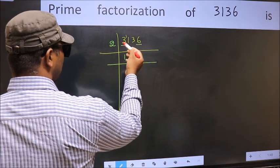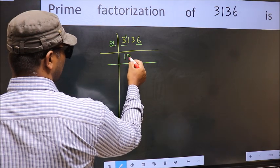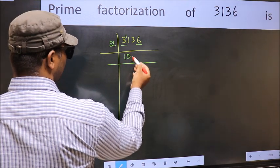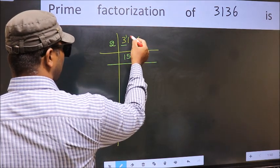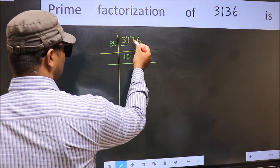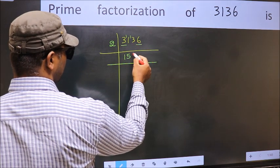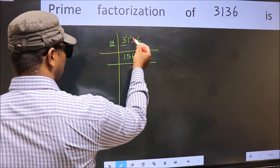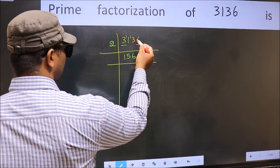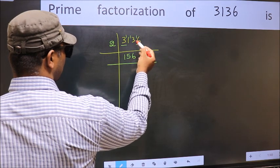A number close to 11 in the 2 table is 2×5=10. 11 minus 10 is 1, carried forward 13. A number close to 13 in the 2 table is 2×6=12. 13 minus 12 is 1, carried forward 16.